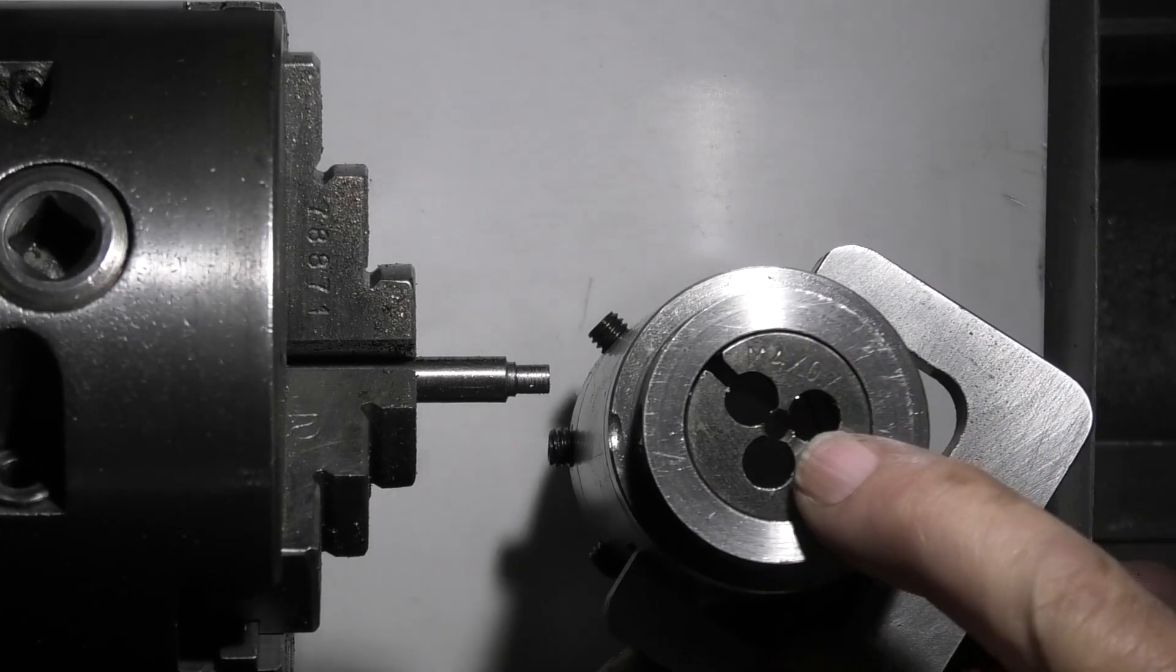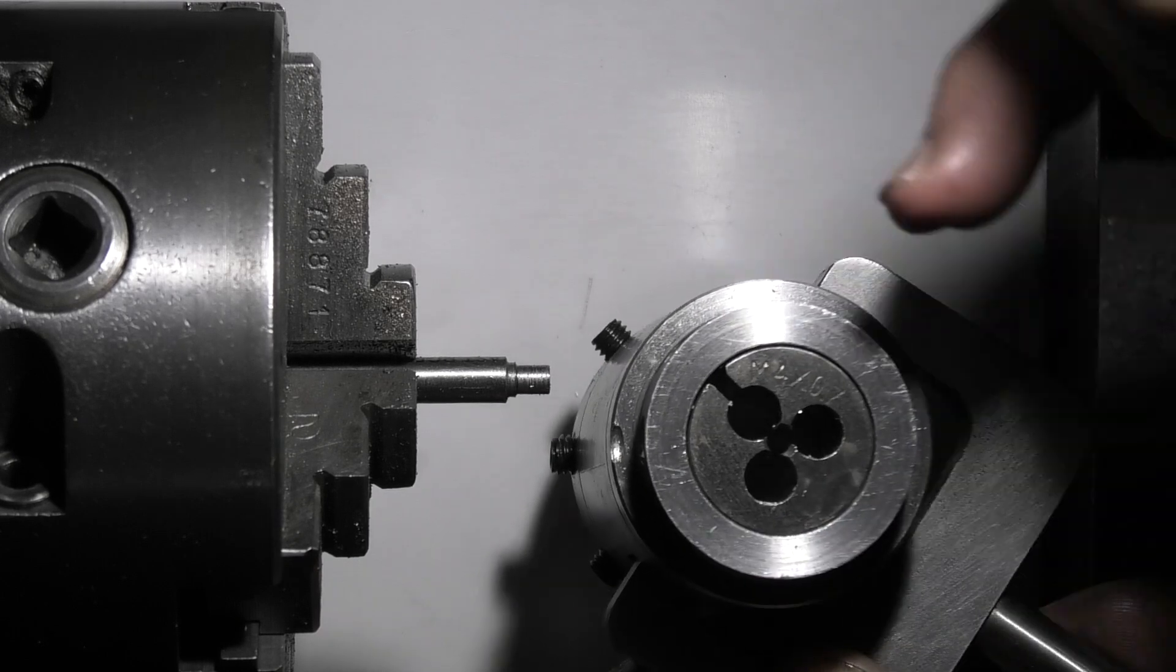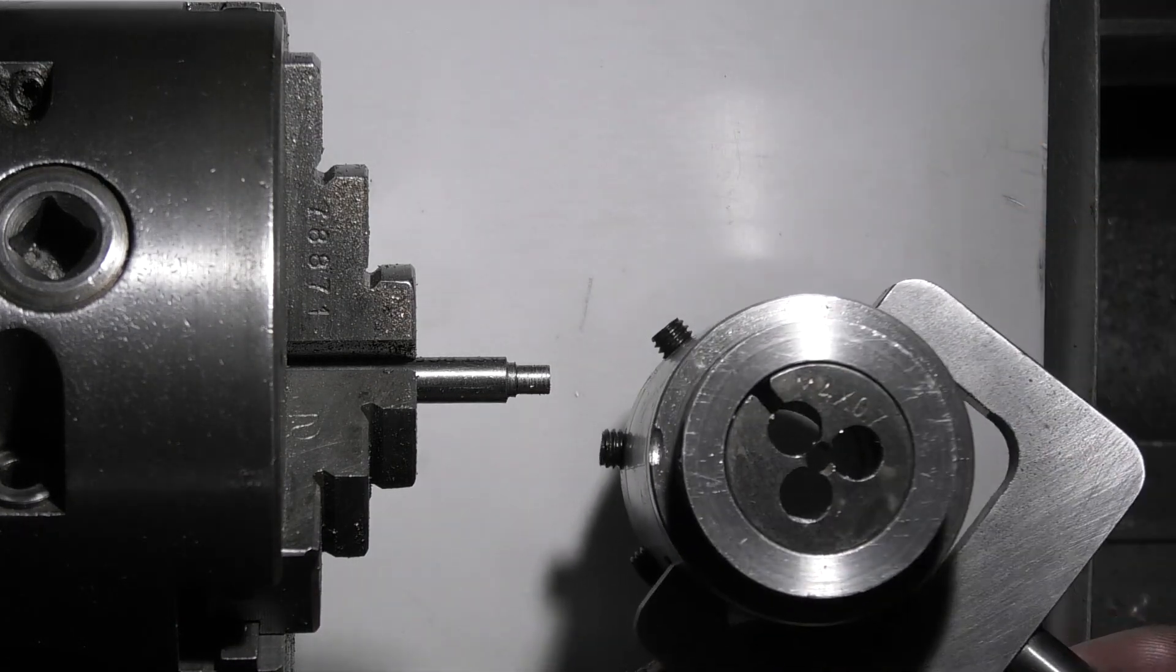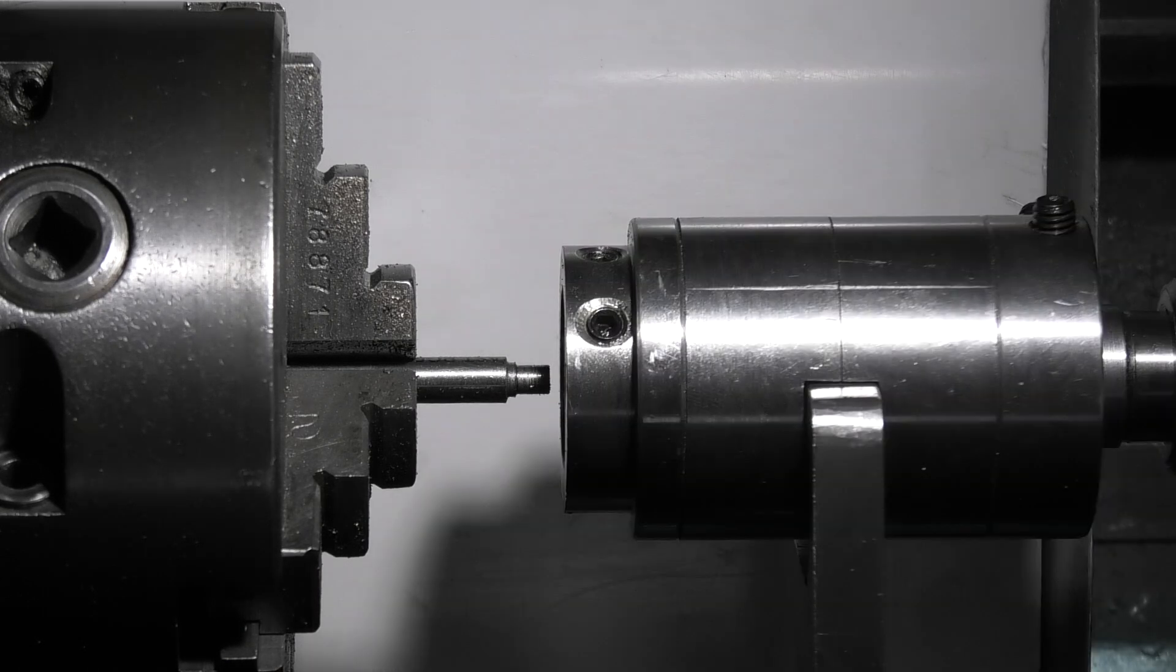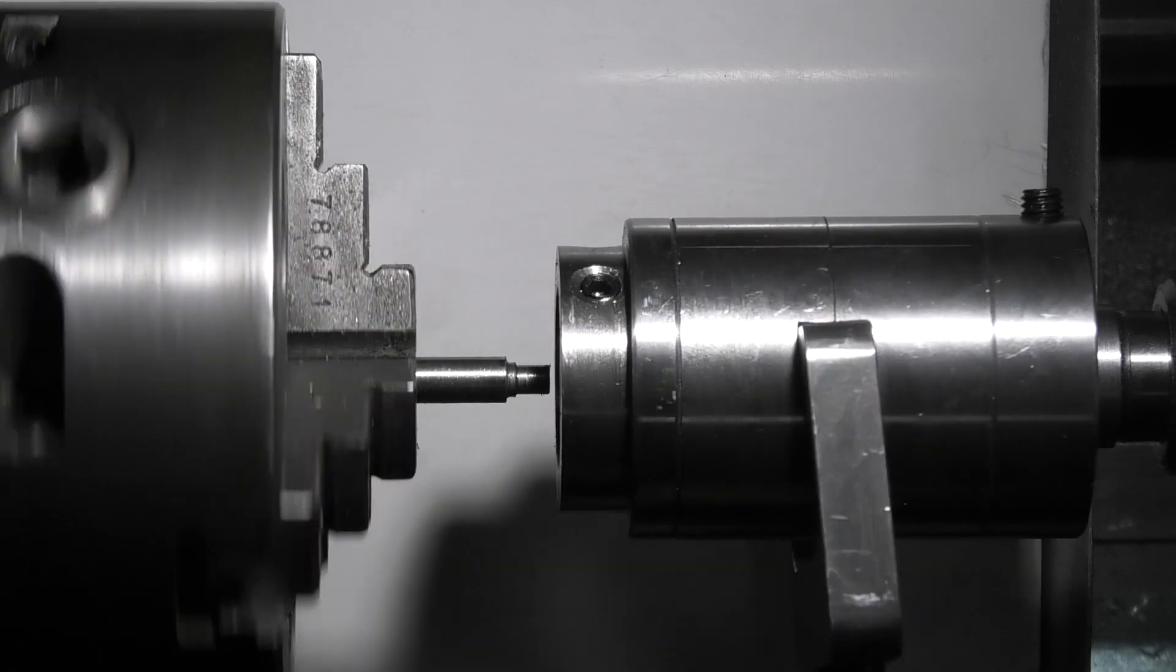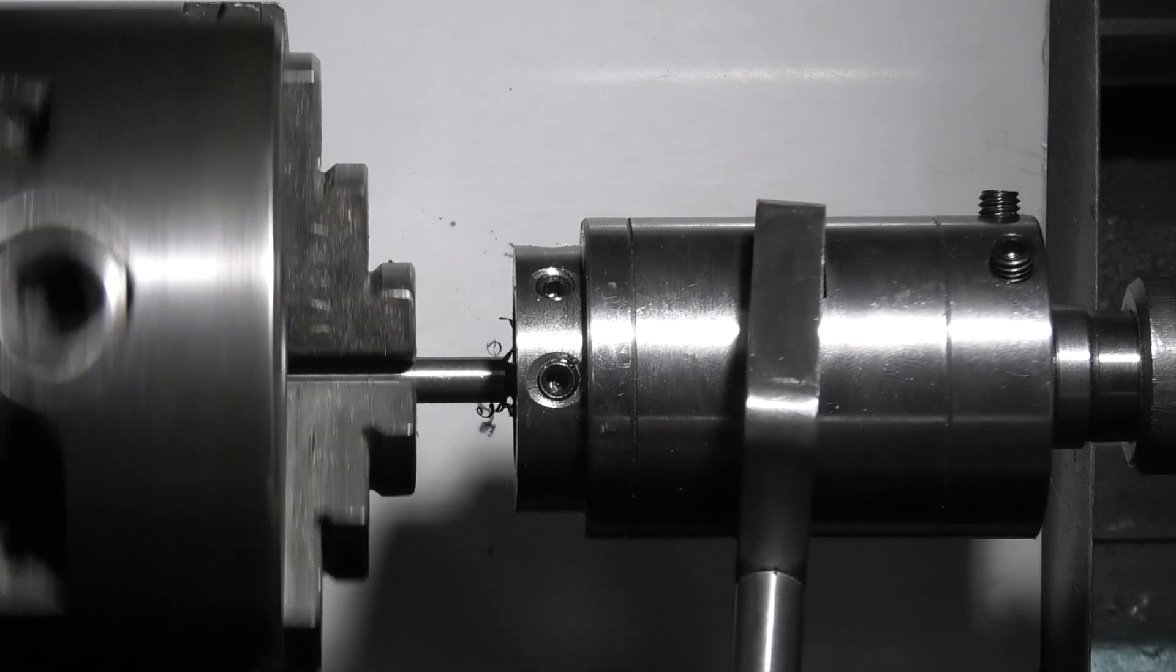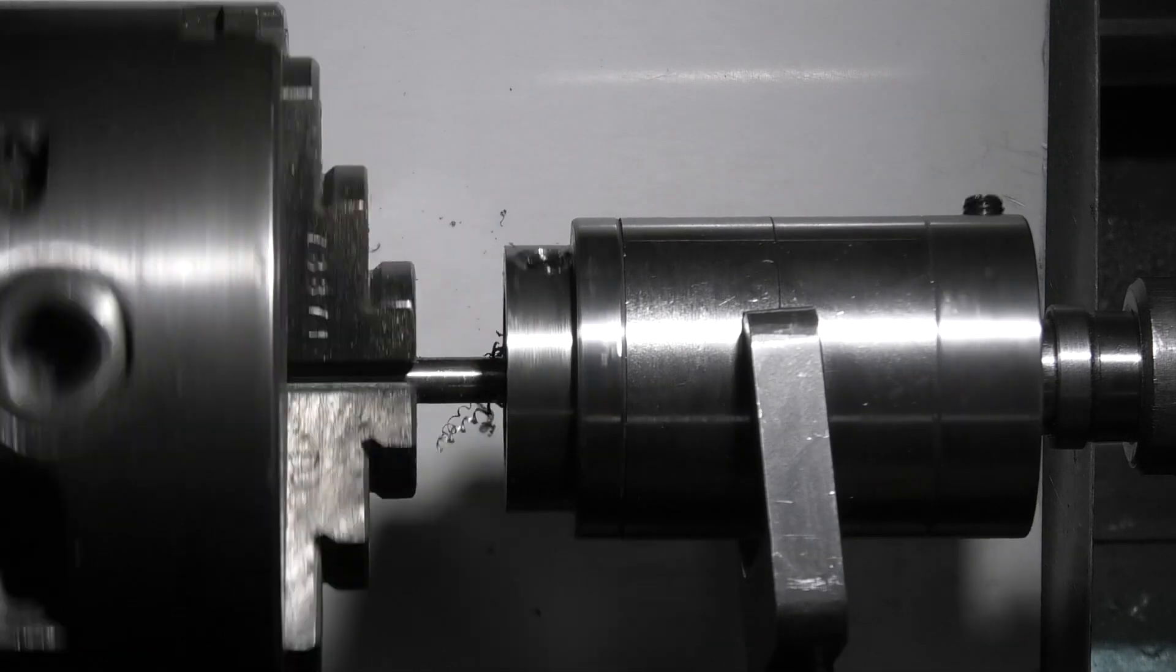I fitted the M4 die in my die holder and I've tightened the grub screw up here as far as it'll go so it's opened the die up. I'd rather have the thread tight and take some more off than find it's too loose. Slow the speed down. Get in. Reverse it.